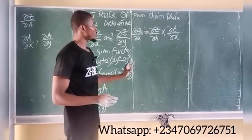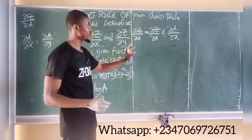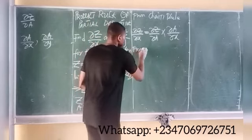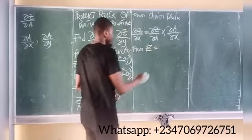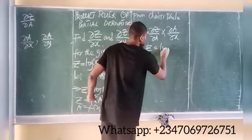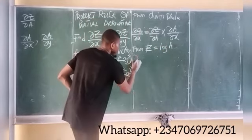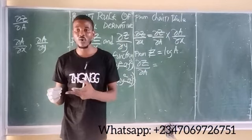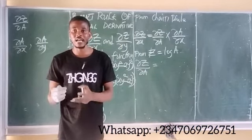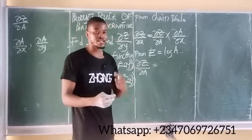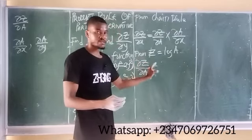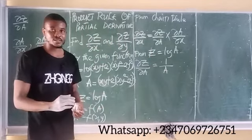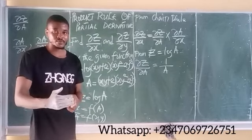Now, the first thing to do is find partial z partial a. From z equals log a, I can find partial z partial a. To differentiate a logarithm function, simply take the reciprocal of the given variable in front of the log. So if I differentiate log a, I take the inverse of a, giving the derivative. Therefore, partial z partial a is simply 1 over a.